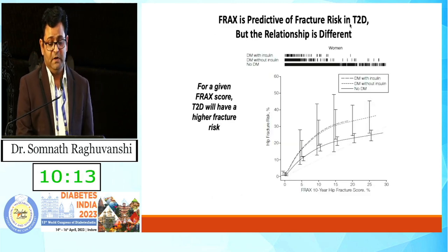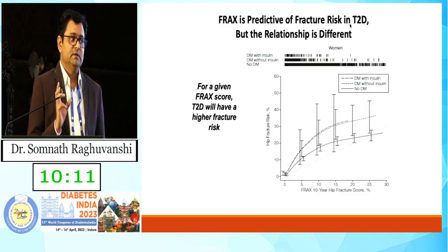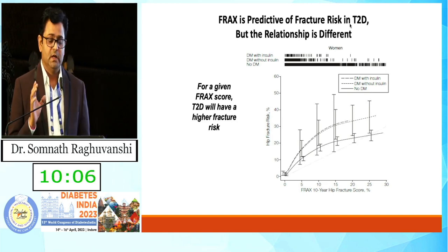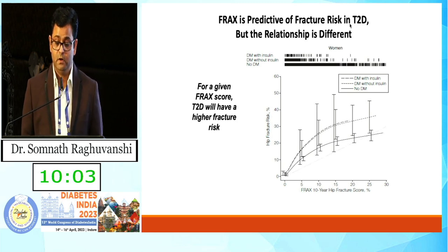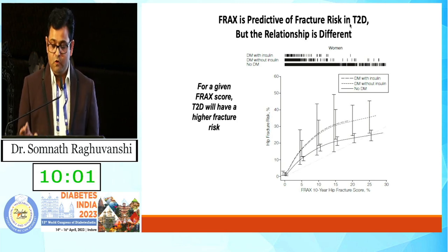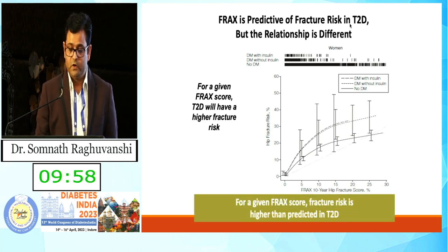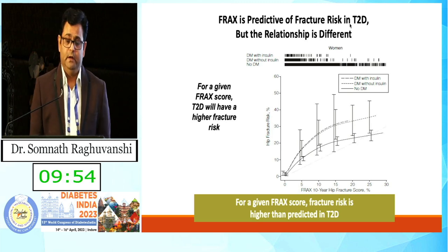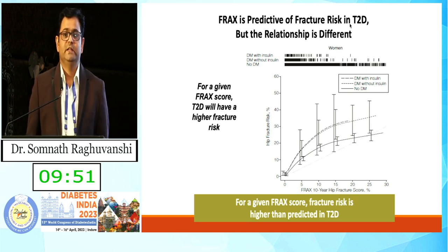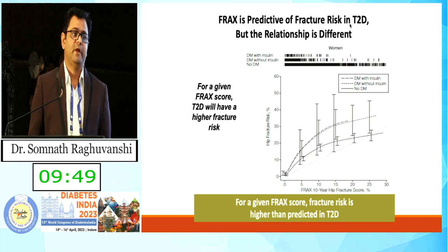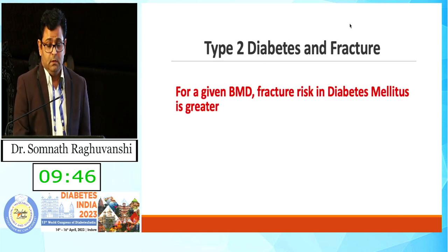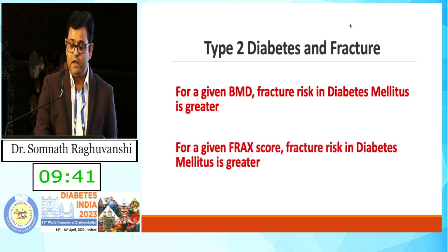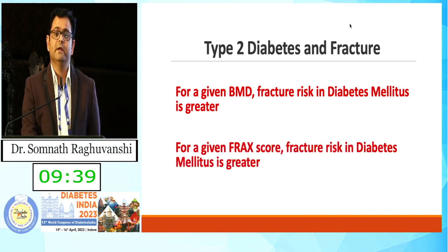Yes, we can use FRAX, but for a similar FRAX score, the risk of fracture is 10% higher in patients with diabetes. For a given FRAX score, fracture risk is always 10% higher in type 2 diabetes. For a given BMD, fracture risk in diabetes is greater, and for a given FRAX score, fracture risk in diabetes mellitus is greater. So FRAX underestimates the risk of fracture in patients with type 2 diabetes.